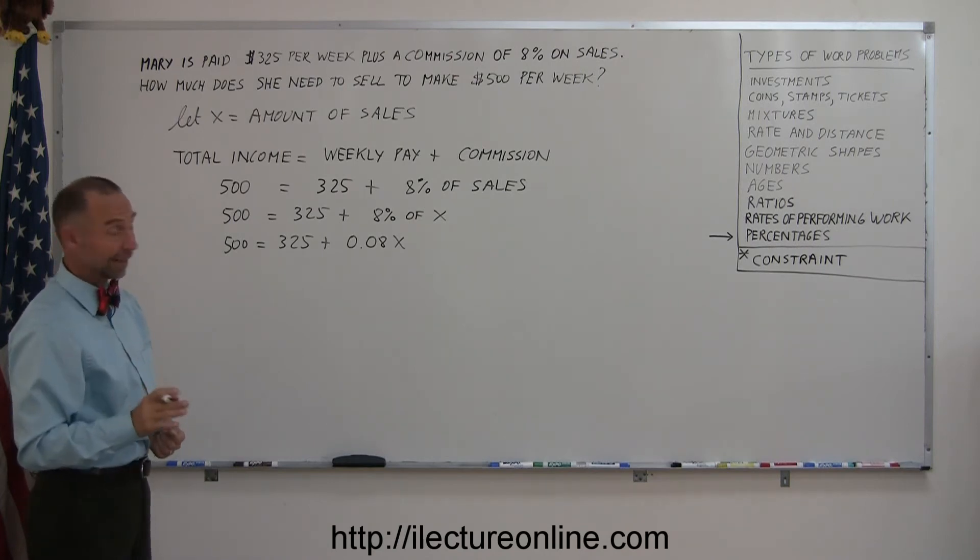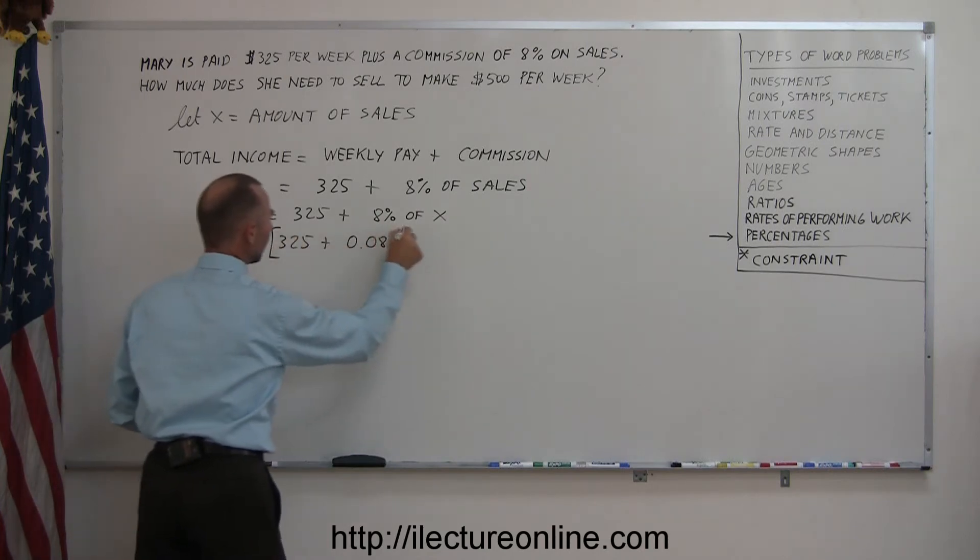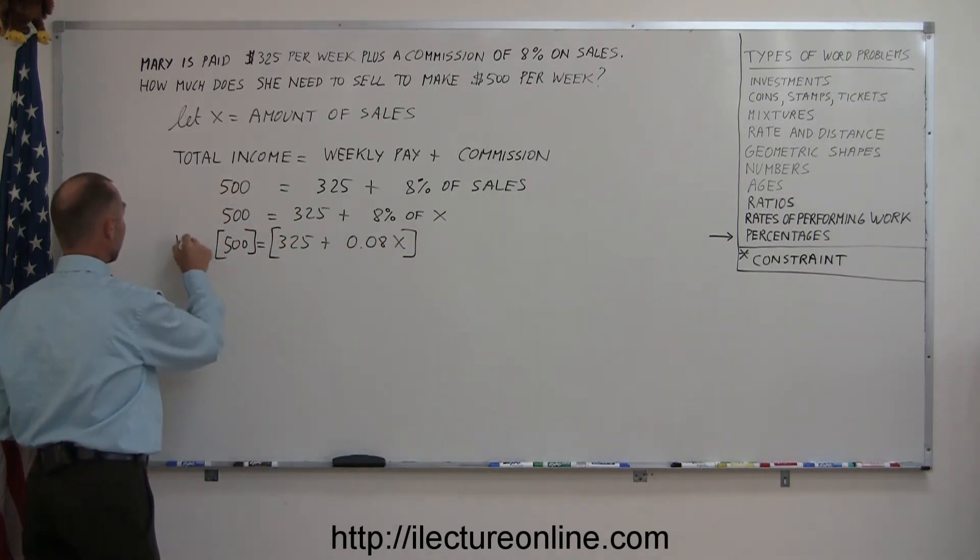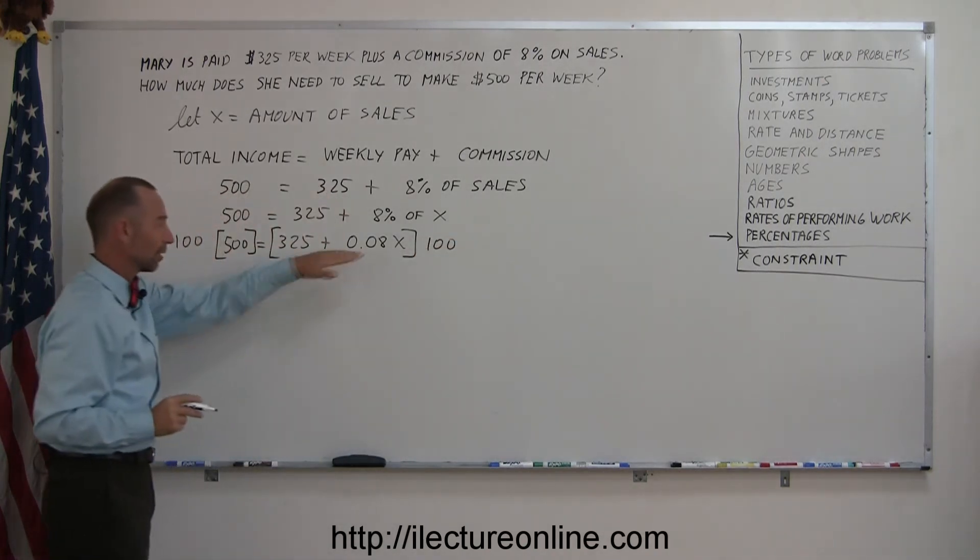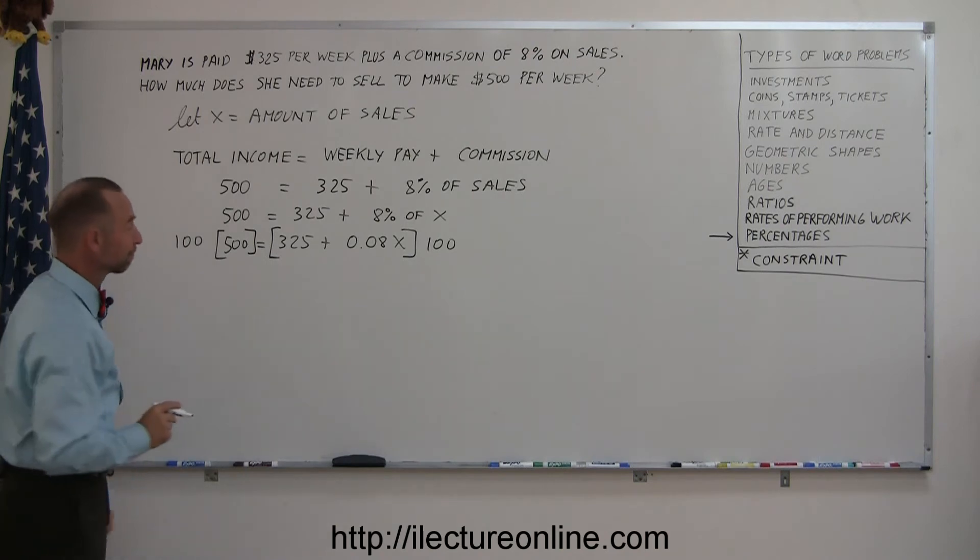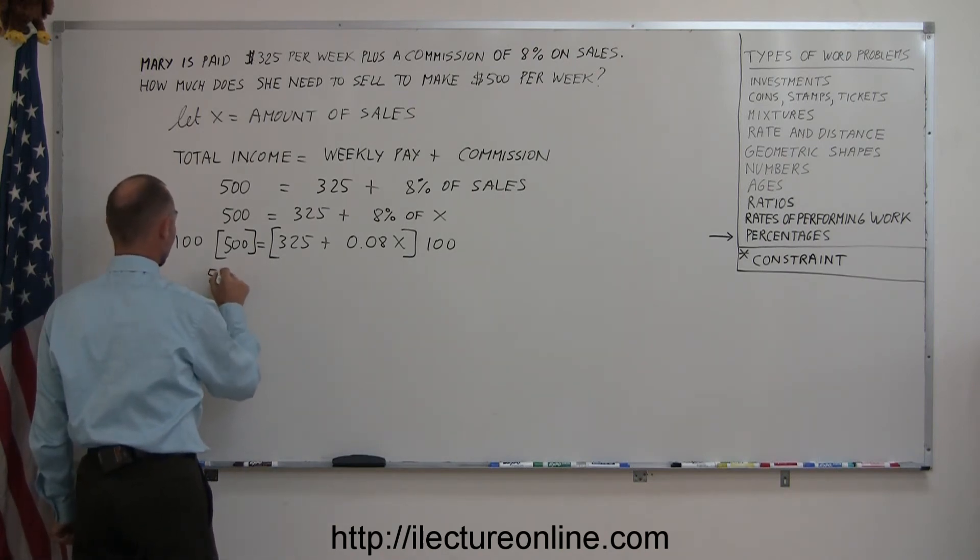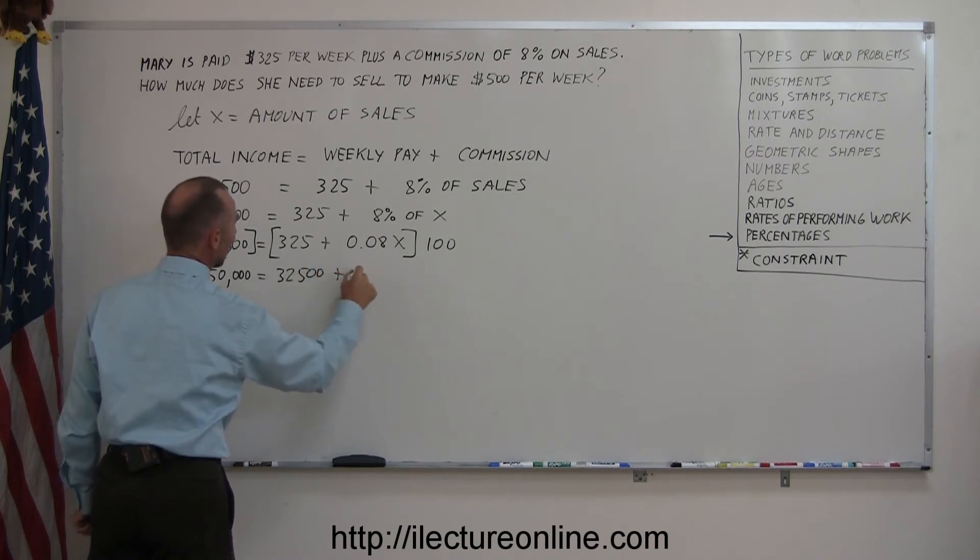So the first thing we want to do is get rid of the decimal place. So we multiply both sides by the appropriate number. Since there are two decimal places, that means we want to multiply both sides by 100. So the left side times 100, the right side times 100, that should get rid of the 0.08. 500 times 100 is 50,000 equals 100 times this is 32,500 plus 8x.